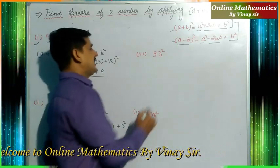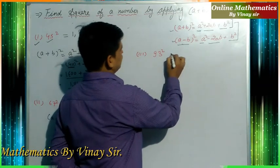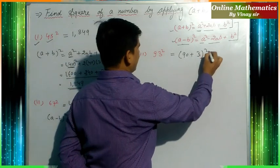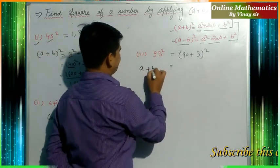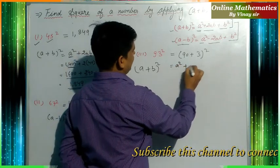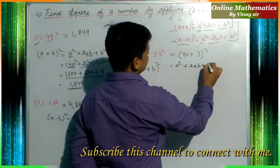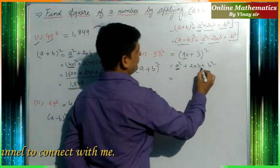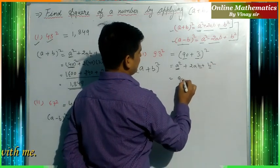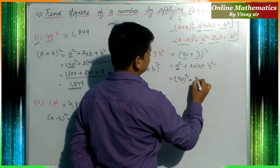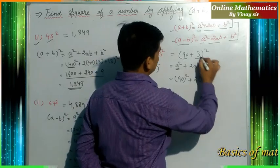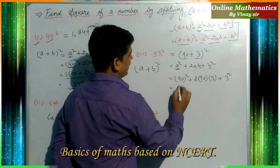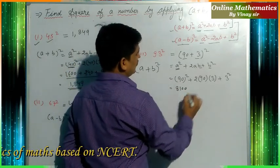The next example is 93². This 93² can be written as (90+3)². Applying (a+b)² = a² + 2ab + b², with a = 90 and b = 3, we get 90² + 2×90×3 + 3². The square of 90 is 8100.